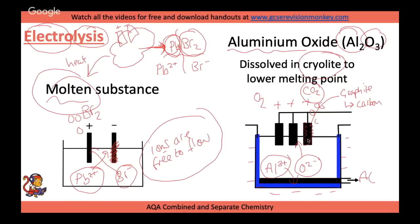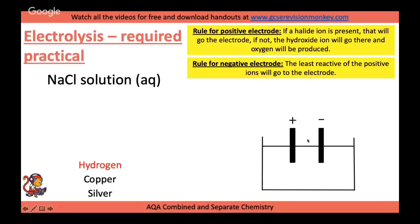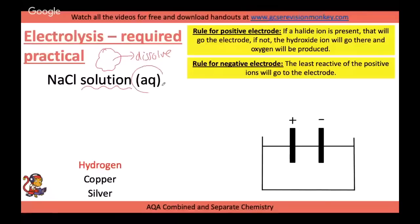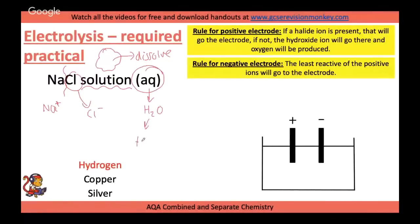Electrolysis gets more complex when the ionic compound is dissolved in water rather than melted. With sodium chloride solution, the water splits into H⁺ and OH⁻ ions. So in the solution you have sodium ions, chloride ions, hydrogen ions, and hydroxide ions — two positive ions and two negative ions competing.